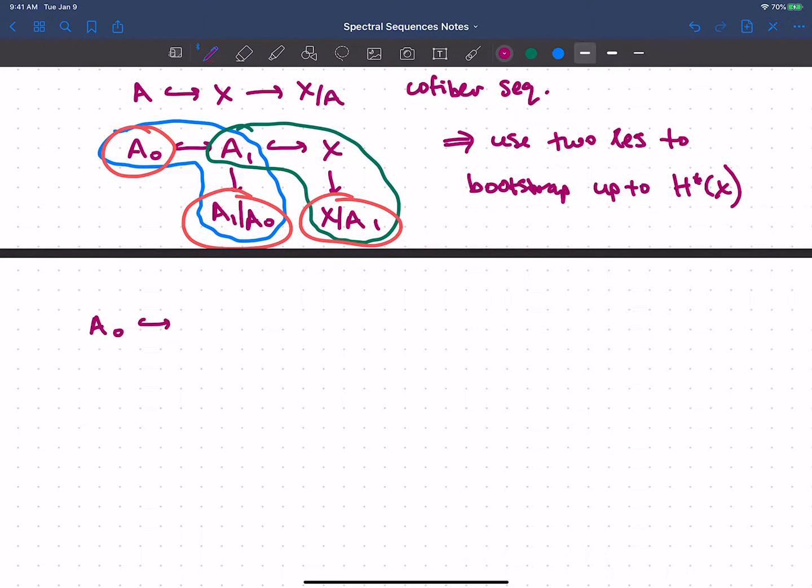So I want to start with some A0 up to A1 and so on, some long filtration. And I could keep going. Maybe let's assume for now that this stops at some finite stage. And that's my X. And then I have all of these filtration quotients. So all of these are supposed to be good inclusions. So that this is a cofiber sequence here. So I've got my cofiber sequence as before. And then my next filtration quotient.